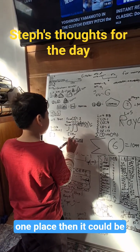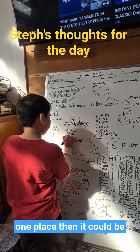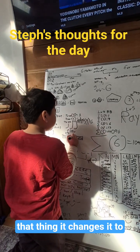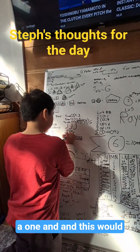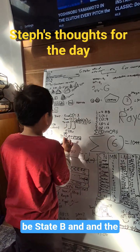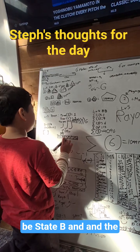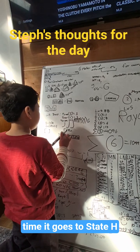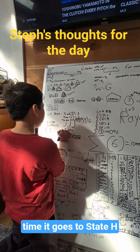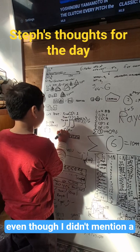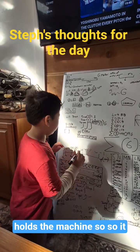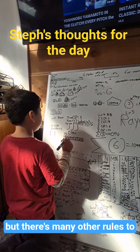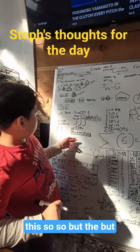When you move from that position, it changes the zero to a one. It could then be over in state B and move to the left one more time. It then goes to state H — even though I didn't mention state H before, that means Halt, which stops the machine. It replaces it with a one again, but there are many other rules to this.